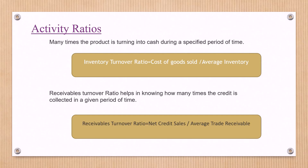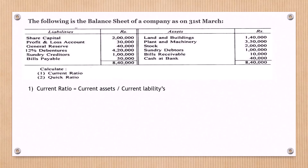Let me solve one simple problem related to the liquidity ratio. The question involves a balance sheet as on 31st March with liability items and asset items. Using these items we want to calculate the current ratio and the quick ratio. The formula for current ratio is current assets divided by current liabilities.